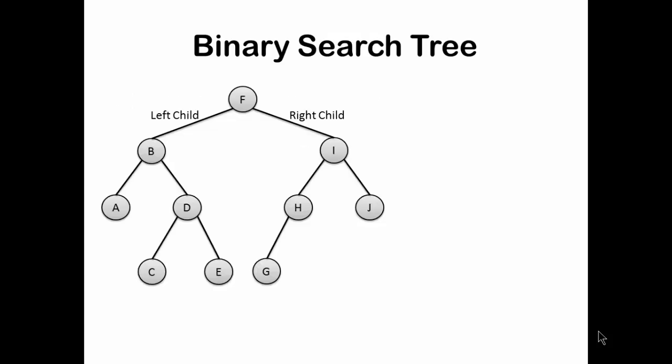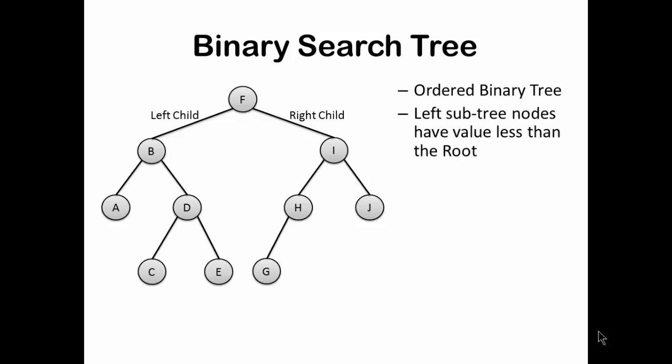As the name suggests, a binary search tree first of all has to be a binary tree, so the basic properties of the binary tree should be fulfilled. It is an ordered binary tree. A root node cannot have parents, and every node cannot have more than two children — at most zero, one, or two. The special condition in a binary search tree is that the left subtree nodes should have values less than the root, and the right subtree nodes will have values larger than the root.